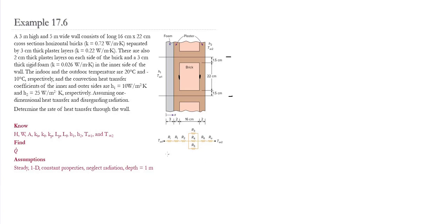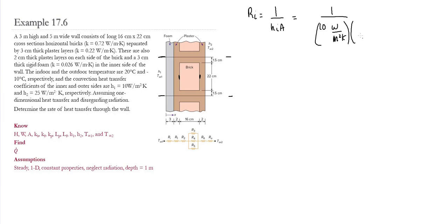We start by evaluating R_i, the inner convection resistance, which is 1 over h_i times the cross-sectional area. The cross-sectional area spans 22 centimeters plus 1.5 centimeters of plaster on top and bottom, giving 25 centimeters total. With a depth of 1 meter, the area is 0.25 m². So R_i equals 1 over 10 W/m²K divided by 0.25 m², giving a convection resistance of 0.4°C/W.